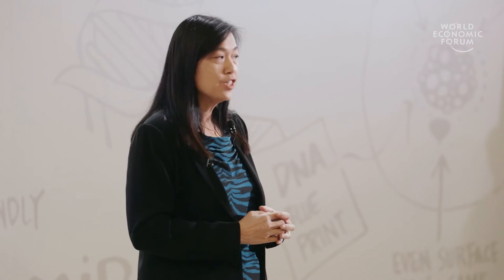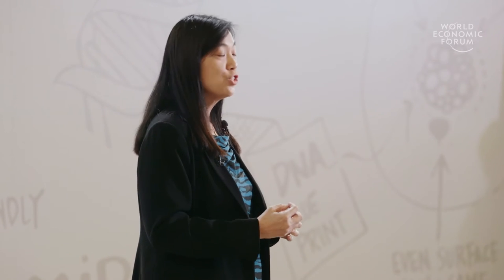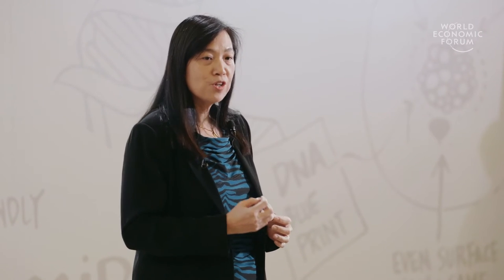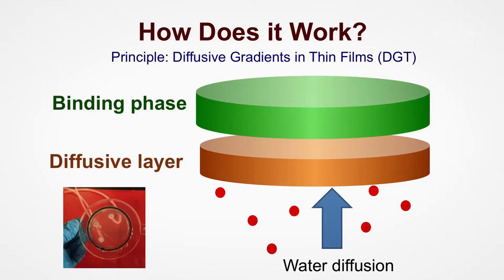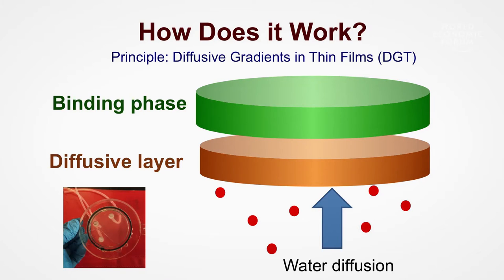The first component, the concentrator, works on the principle of diffusive gradients in thin films. The phosphorus target diffuses through a thin membrane and into a polymer solution, which captures or binds the targets. The whole process is very fast, and the concentrator is only this big in size.